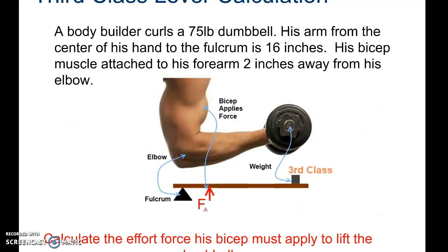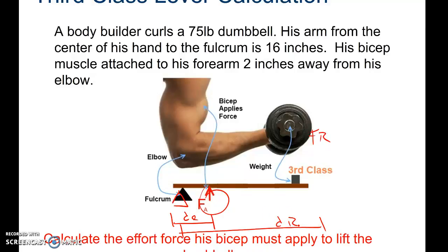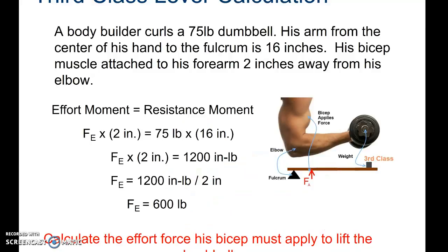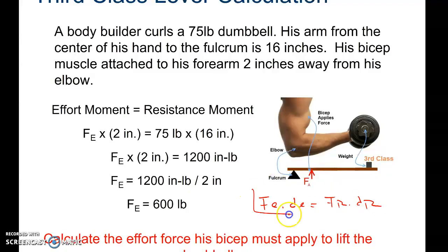Here's an example you can work on — working through this problem will help you understand the calculation of levers. This is actually a third class lever: the resistance force is the weight, your muscle is your effort force, and here's your fulcrum. Your DE is measured from the fulcrum to the muscle, and your DR from the fulcrum to the weight. The equilibrium equation is FE times DE equals FR times DR, and this is a key equation in many of the problems we're going to solve.